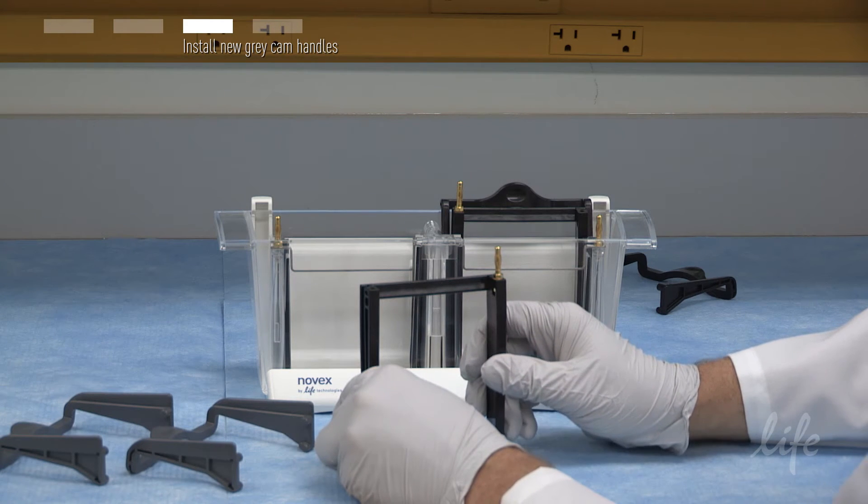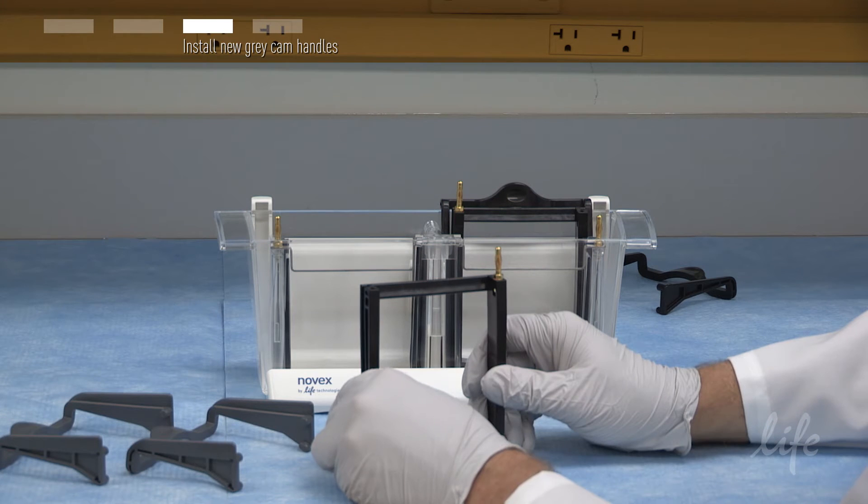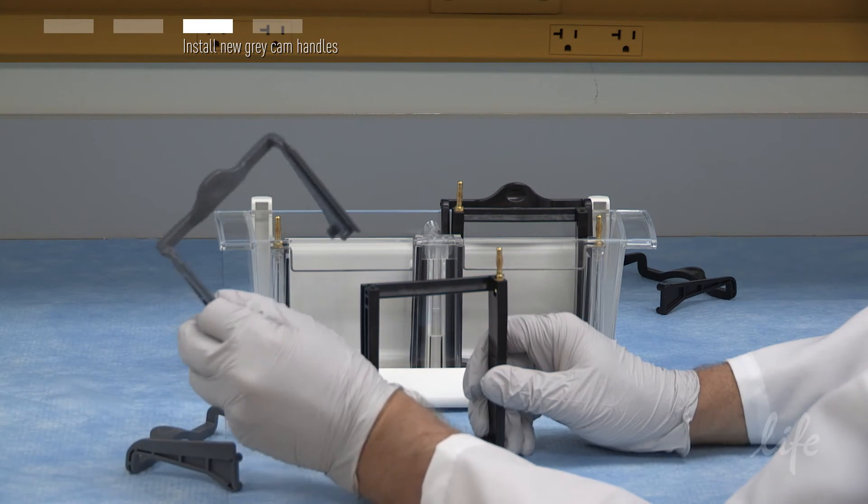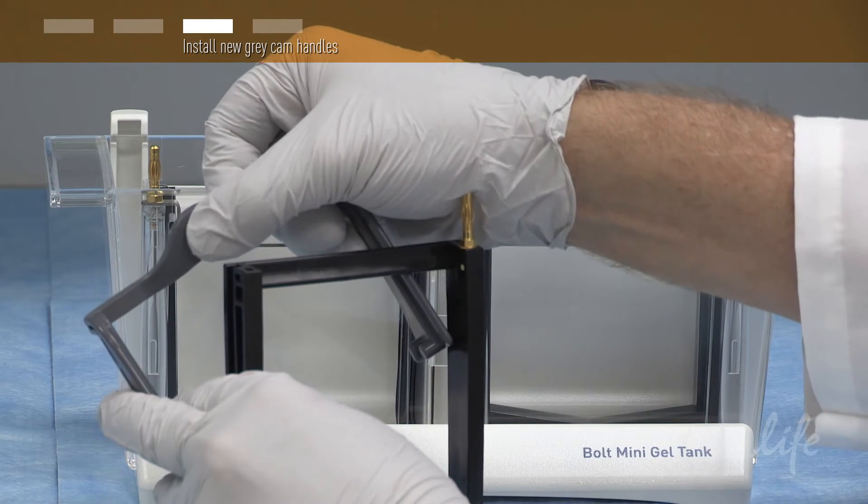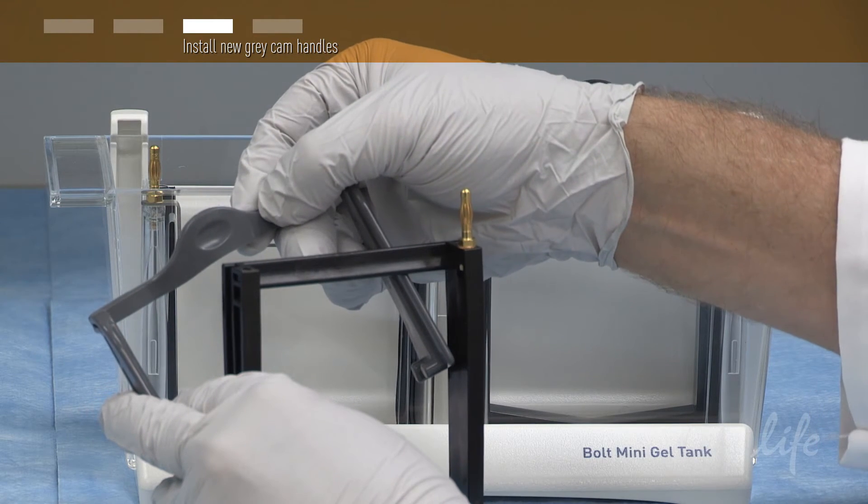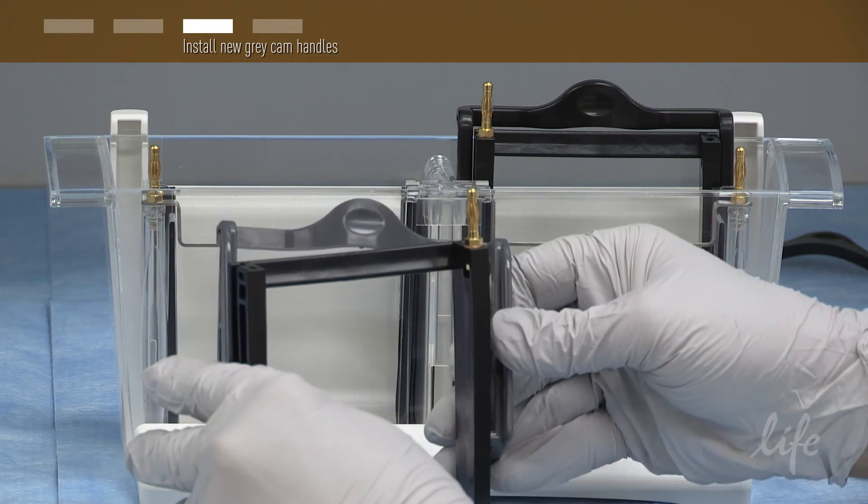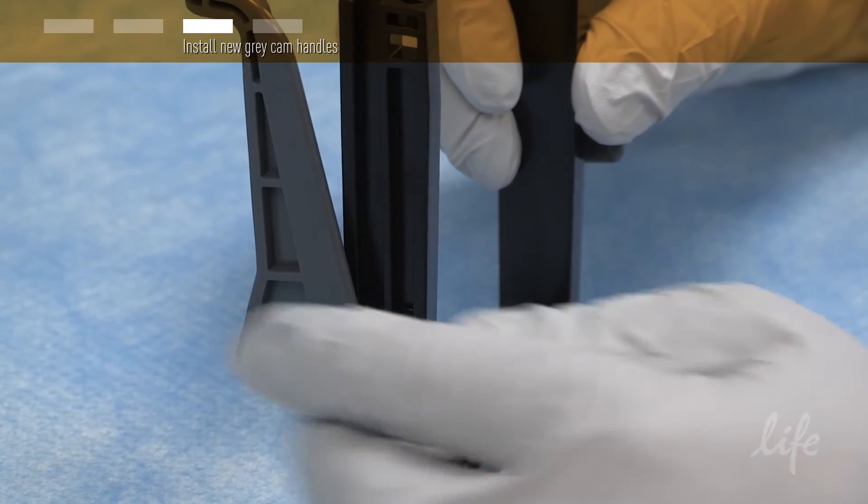While holding the cam plate in the same orientation facing you, take a new gray cam handle and with the side that has the smooth indentation on the top facing towards you, fit the two pegs of the cam handle into the two corresponding holes on the cam plate.